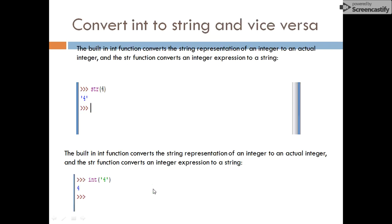Now, how can we convert an integer to a string or a string to an integer? Python provides two specific built-in functions for that purpose: str() and int(). str() takes an integer argument and converts it to a string. int() takes a string value and returns the integer value. These two built-in functions are used to convert between integer and string.